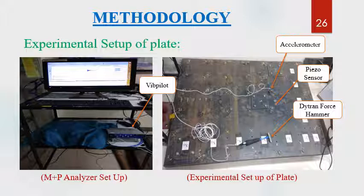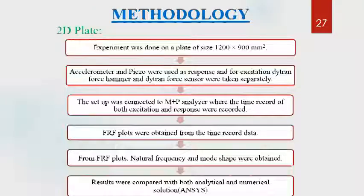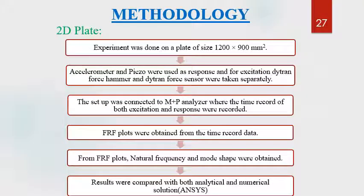Modal analysis was further carried out on a plate to obtain natural frequency and mode shape. The plate is simply supported and both sensors were placed at the middle of the plate, connected to the M+P analyzer. Two types of excitations were used — Dytran force hammer and Dytran force sensor. The plate was analyzed as a 2D plate with dimensions 1200 x 900 mm. FRF plots were obtained from which natural frequency and mode shapes were extracted and compared with analytical and numerical solutions.